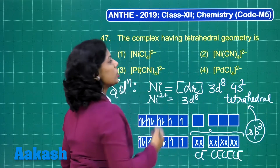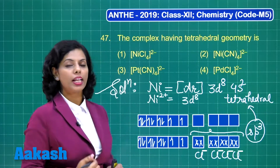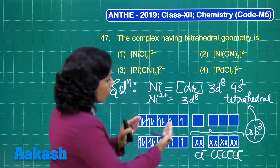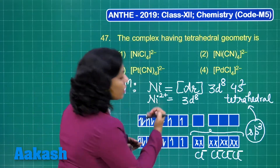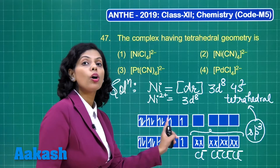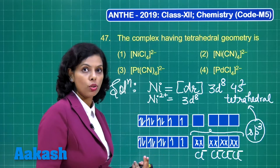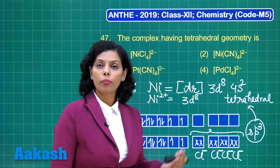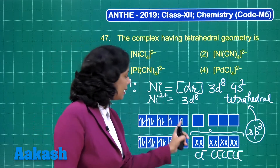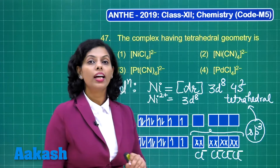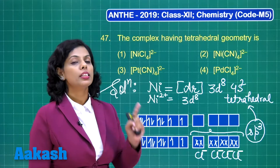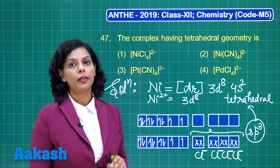Similarly, CN⁻ is a strong field ligand, meaning it is able to cause pairing of electrons — one electron will pair up, causing forced pairing. This results in the formation of dsp2 hybrid orbitals, and that is why the geometry would be square planar.